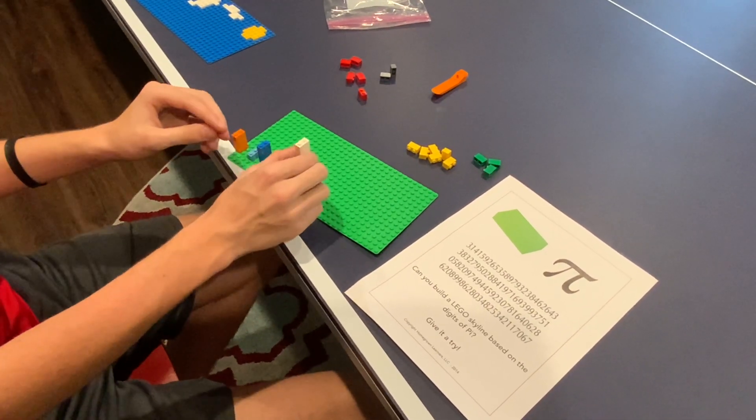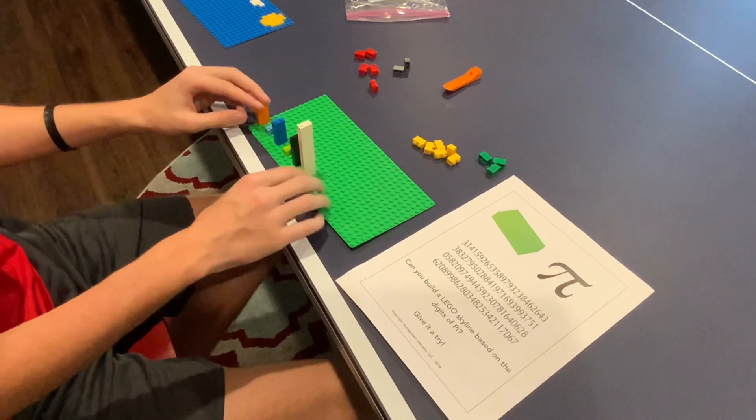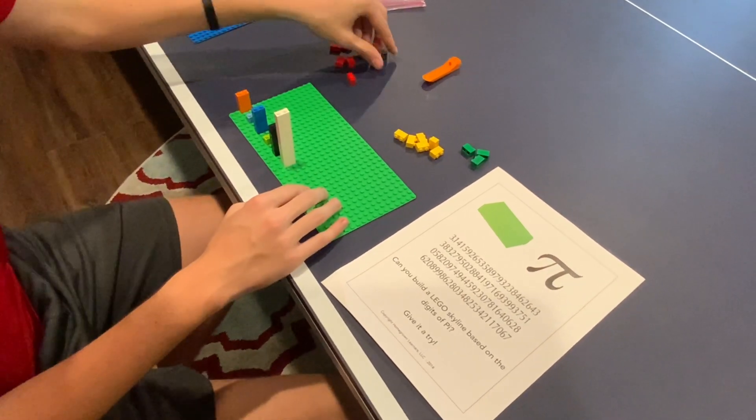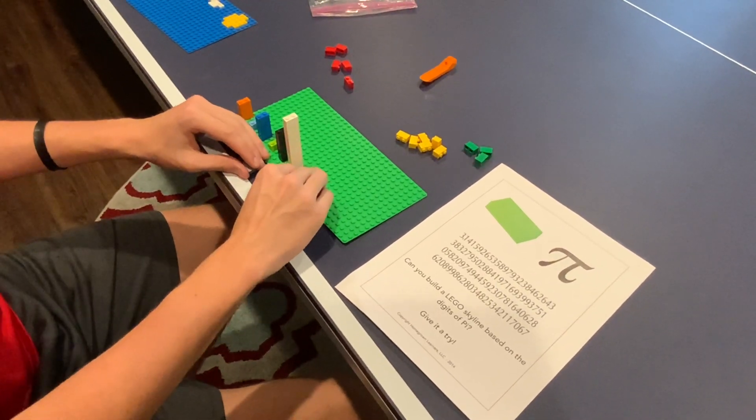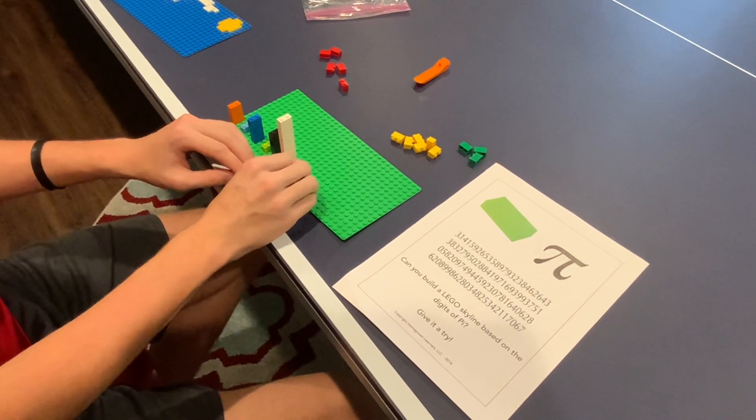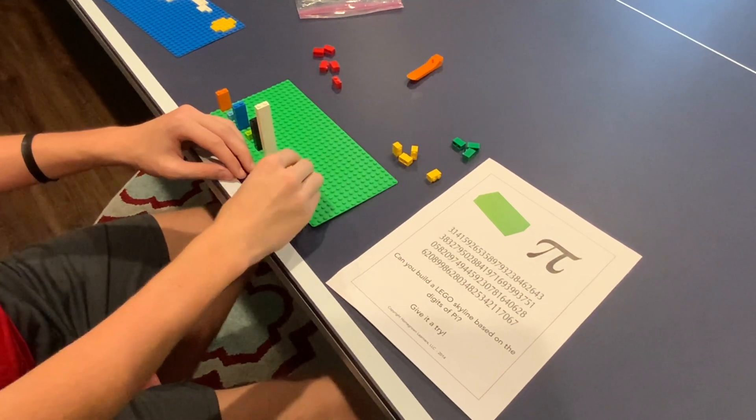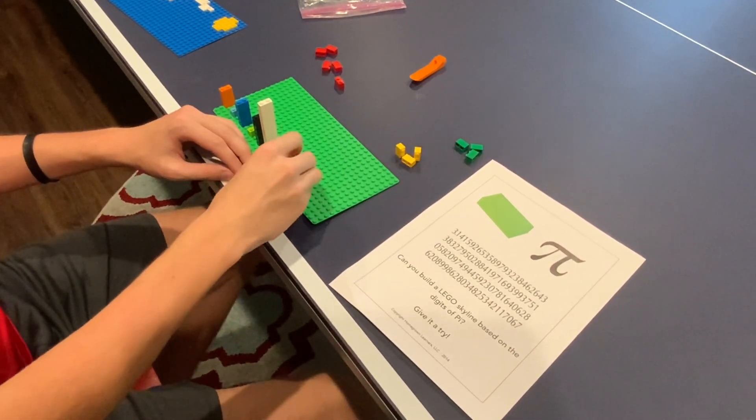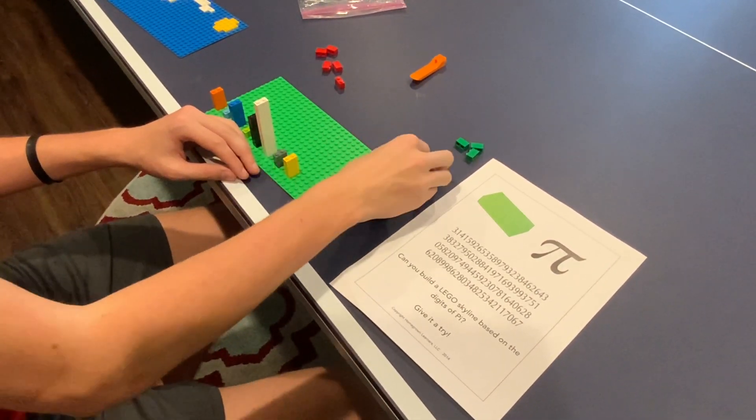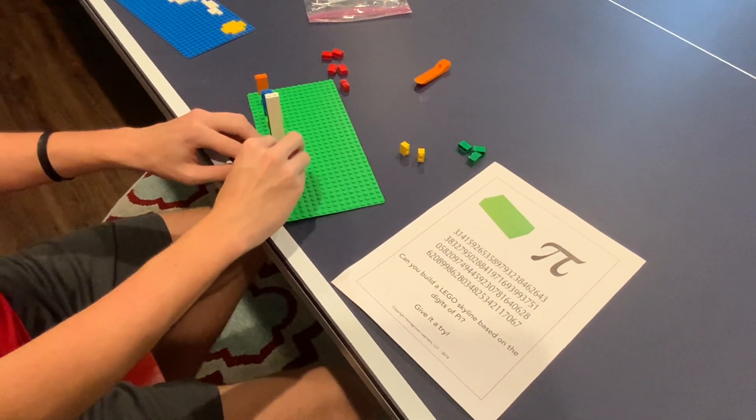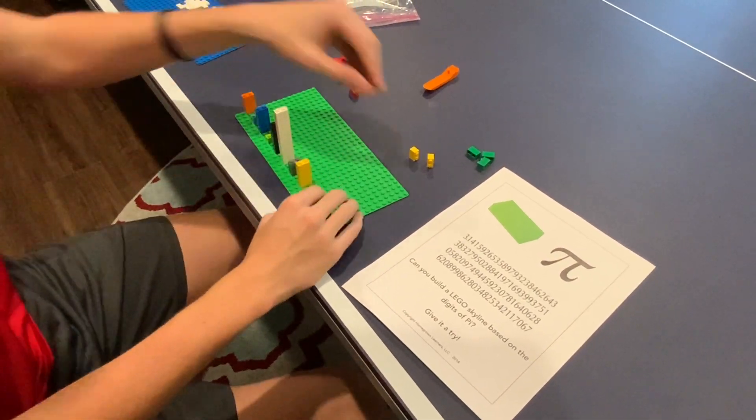The next one is two. So we have two grays. Then the next one is six. So we have yellows. Once again, you don't have to have the certain colors. I just figured it would be better for the purpose of this video to be able to discern between the numbers.